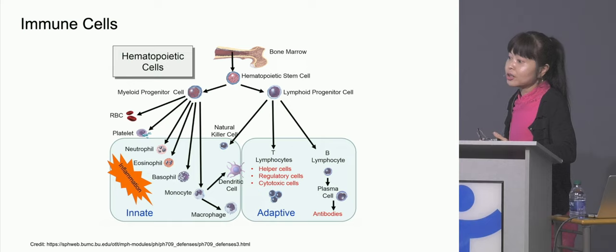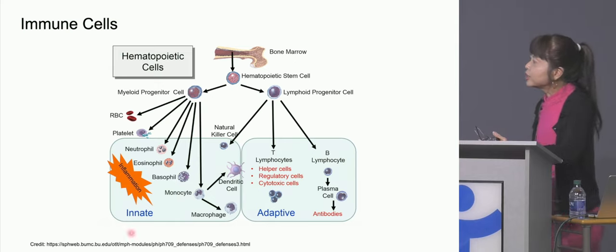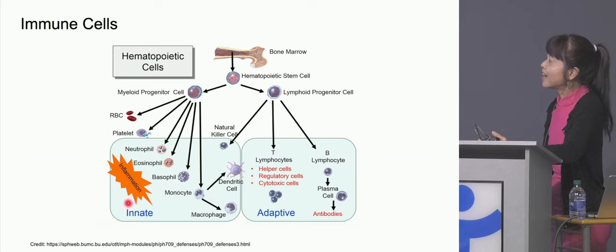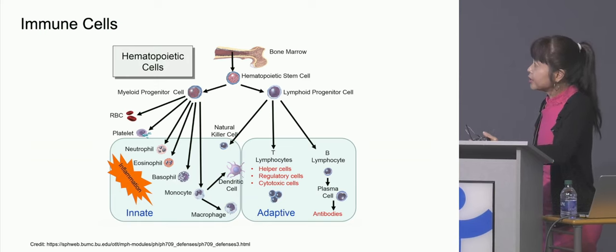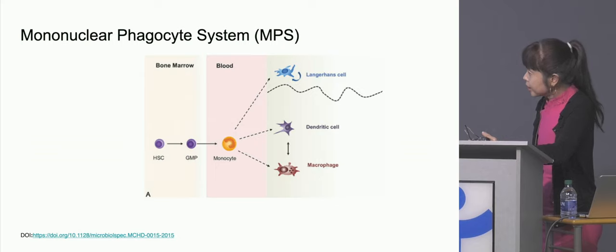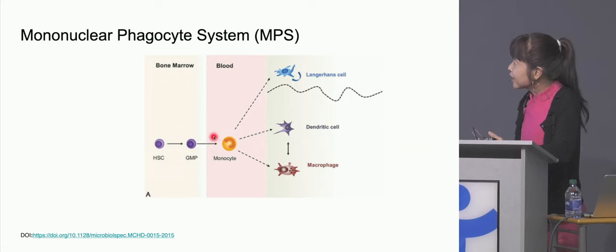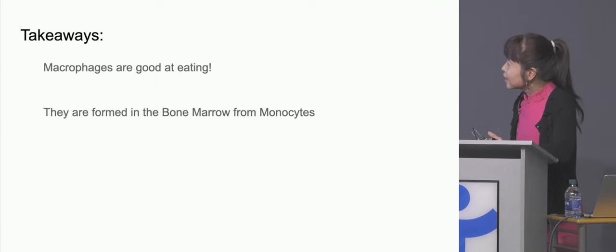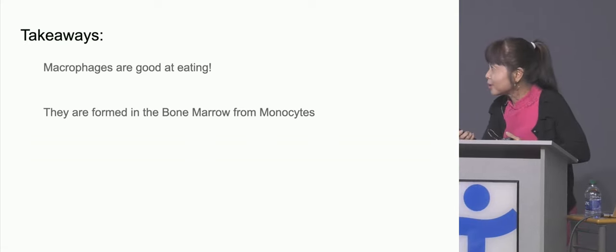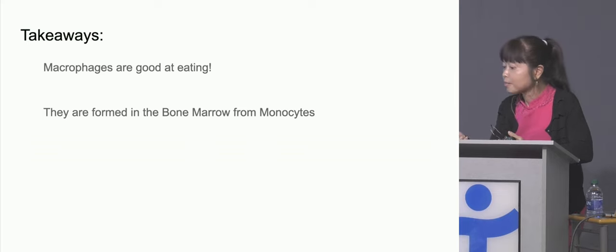The adaptive system, however, takes a longer time to mobilize — something like a week before they're ready to come out and defend you. So we really do depend on that innate system to keep us safe in the immediate period. From the hematopoietic stem cell we get this monocyte, and this can develop into different cell lines, of which the macrophage is one. The takeaways so far: macrophages are really good at eating, and they are formed in the bone marrow from cells called monocytes.